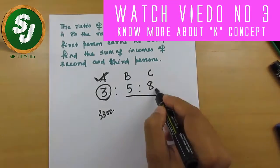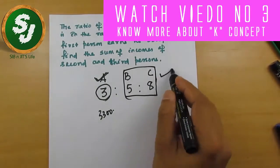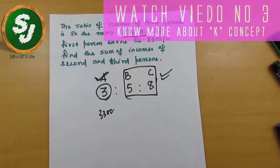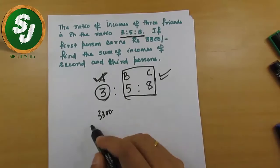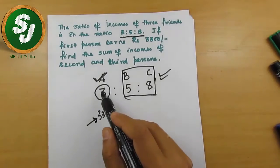The question is asking to find the sum of second and third person. What I told you in the last video is that if the ratio is given, you have to multiply K with every number that signifies the ratio and use the given data to find the value.